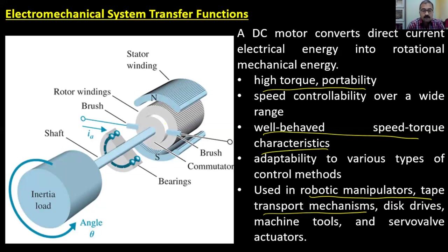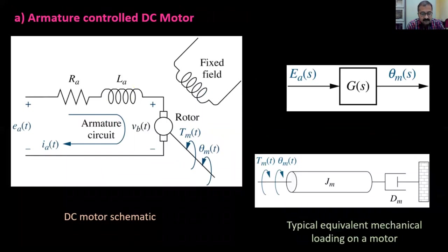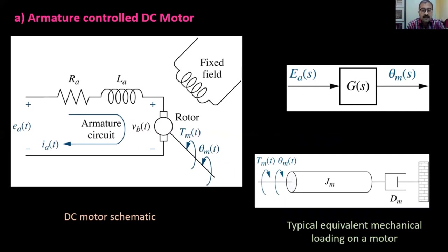The motor has an armature winding and a field winding. The armature winding has resistance Ra and inductance La, and since it is a motor there will be a back EMF Vb(t). Ea(t) is the applied armature voltage — the input voltage. The field winding carries a fixed current so the magnetic flux is constant. The motor is coupled to the mechanical load through a shaft, and the mechanical load has inertia Jm and viscous damping dm.